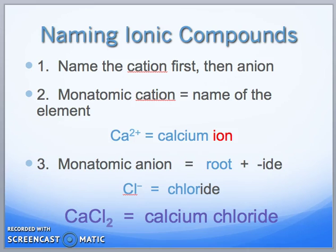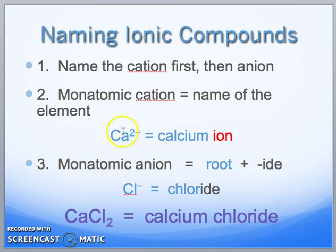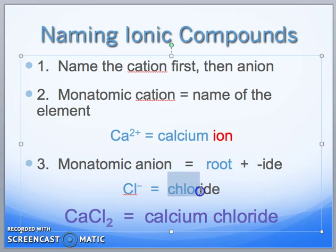When naming ionic compounds, name the cation first, then the anion. Monoatomic cations are just the name of the element — for example, 'calcium ion,' no name change needed. However, for a monoatomic anion, we add the '-ide' suffix. So we use the root of the name and change the ending to '-ide.' That's why we have 'calcium chloride' — cation stays the same, anion gets '-ide.'